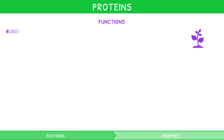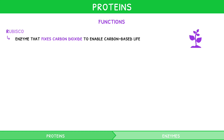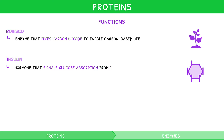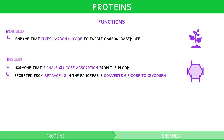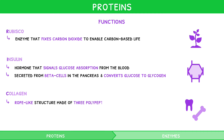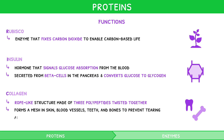R stands for rubisco, which is an enzyme that fixes carbon dioxide from the atmosphere to enable carbon-based life. I stands for insulin, which is a hormone that signals glucose absorption from the blood. It's secreted by beta cells in the pancreas and converts glucose to glycogen. And C stands for collagen, which is a structural protein with a rope-like structure made of three polypeptides twisted together. It forms a mesh in skin, blood vessels, teeth and bones to prevent tearing and cracking.